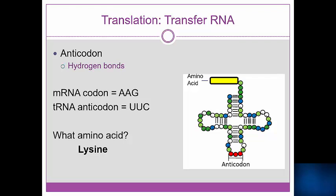Now, if you thought the amino acid was phenylalanine, that's because you used the tRNA anticodon, UUC, and not the mRNA codon, AAG. This is an important detail. The mRNA codon is the only part that will tell us the amino acid.